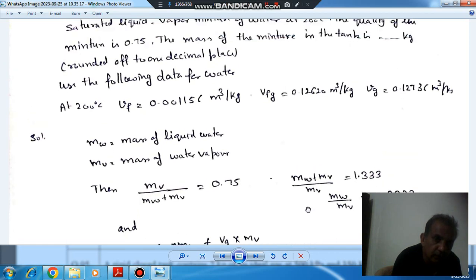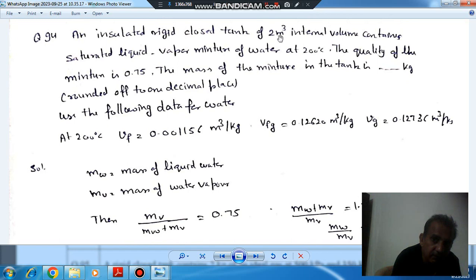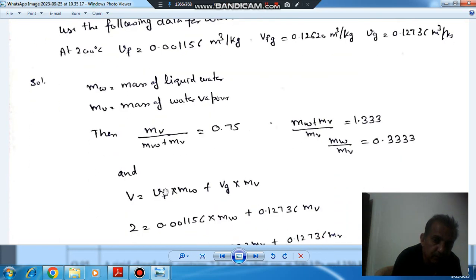Now the volume of the tank is 2 meter cube. The tank is containing vapor phase and liquid phase. Mass of the liquid phase is mw and specific volume of the liquid phase is vf. So that will be the volume of the liquid phase, and that is the volume of the gas phase.